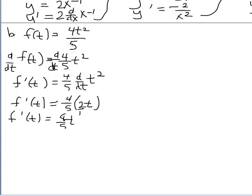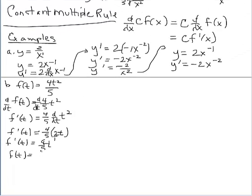Maybe not using the constant multiple rule would be just fine for many of you. Going back to the original problem, if I find the derivative without using the constant multiple rule, I identify the constant as 4 fifths, then apply the derivative operator to t squared: bring the 2 in front, multiply by 4 fifths to get 8 fifths, keep the base of t, and reduce the exponent by 1. The derivative is the same no matter what process you use.